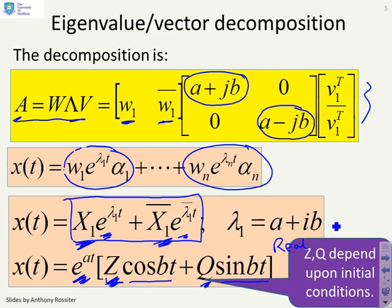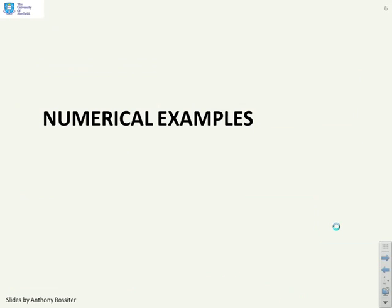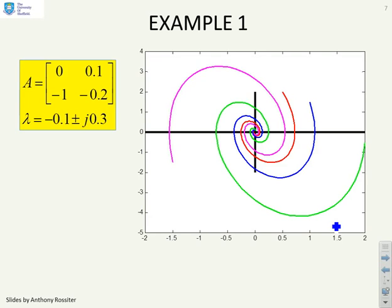Z and Q will depend upon the initial conditions and obviously they also depend upon the definition of the eigenvectors. Some numerical examples then: here's an A with a corresponding lambda and what we see here is what the trajectories do.